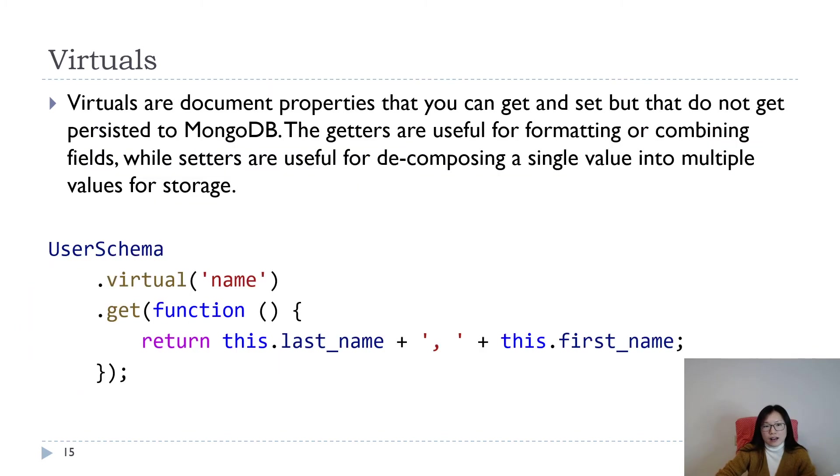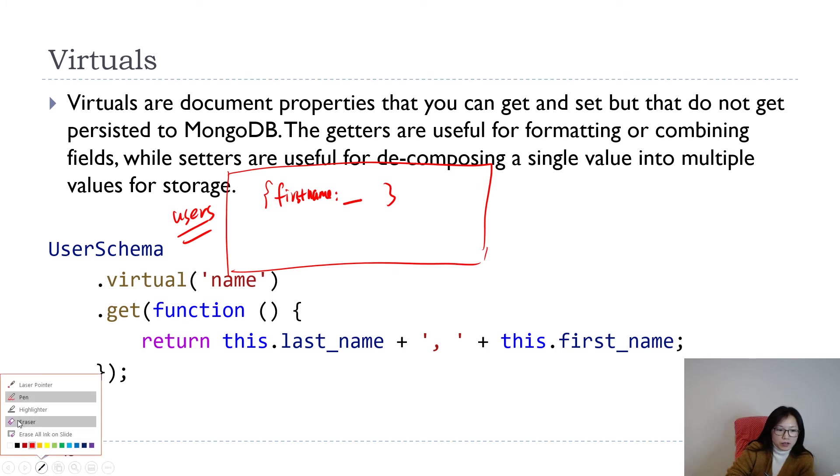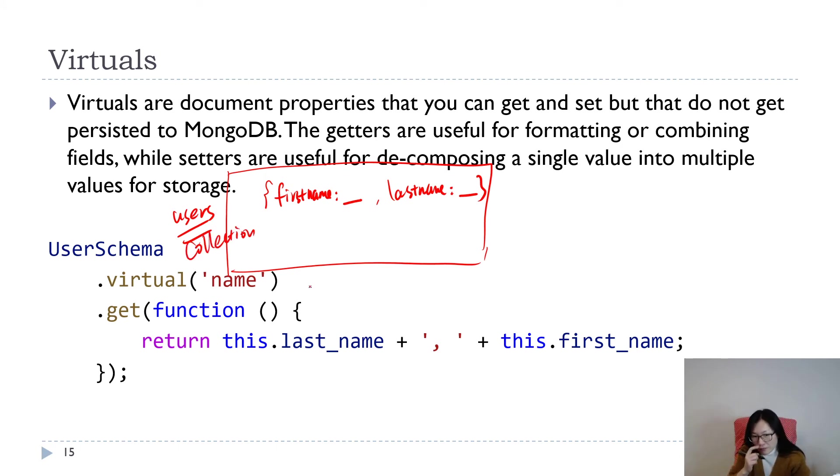This is statics. Next one is virtuals. This is kind of a little bit interesting. Suppose in your document, in the user collection, we have lots of documents. In the document you're gonna have the first name field and also have a last name field.